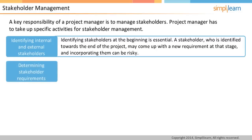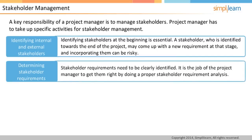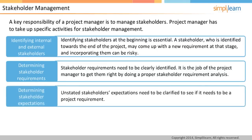Determining stakeholder requirements. After identifying all the stakeholders, the project manager also needs to ensure that their requirements are clearly identified. Sometimes, stakeholders might themselves not know of their requirement, and it is the job of the project manager to get them right by doing a proper stakeholder requirement analysis. Determining stakeholder expectations — stakeholders might also have some unstated expectations, which need to be clarified to see if they can become a project requirement. It is the role of the project manager to determine the stakeholder's expectation.